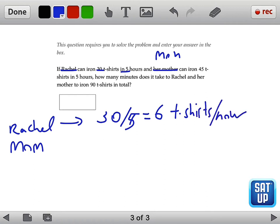Let's look at her mom's speed. Her mom can iron 45 t-shirts in 5 hours, so it seems like her mom is faster than Rachel. 45 t-shirts divided by 5 hours will give us 9 t-shirts per hour.